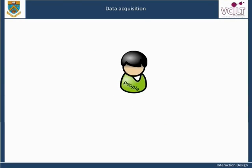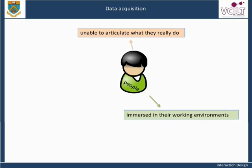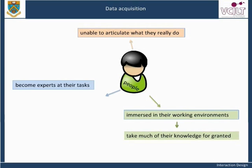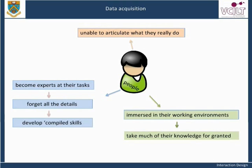Unfortunately, people are often unable to articulate what they really do. This may be because they are so immersed in their working environments, so familiar with the way things work, that they take much of their knowledge for granted. Often, the most important things about the way they work are the ones that are most obvious to them, and therefore the ones they will forget to mention. Also, as they become experts at their tasks, they forget all the details — they develop compiled skills which become difficult for them to break down and describe fully.